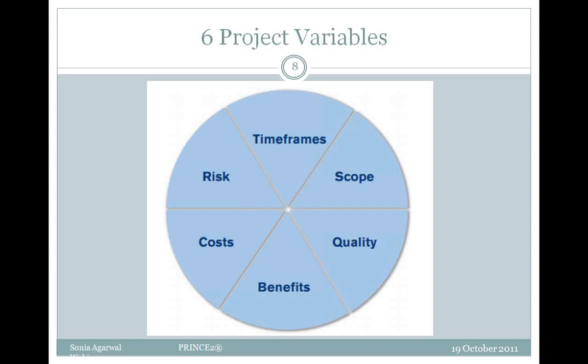There are six variables involved in any project — whether that project is as simple as baking a cake or as difficult as launching a rocket to the moon. These six aspects of project performance are to be managed: time, cost, quality, scope, risks, and benefits.